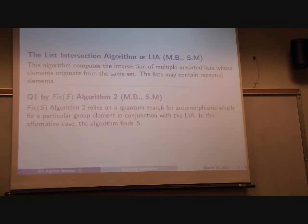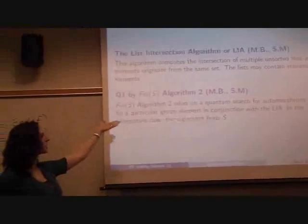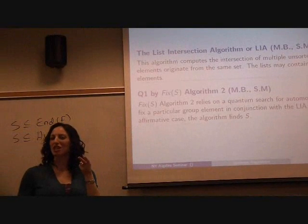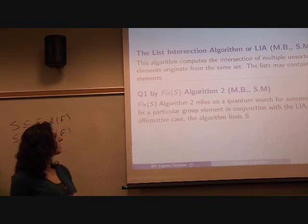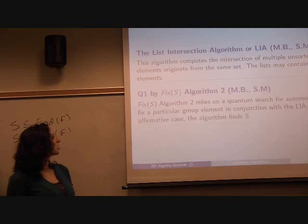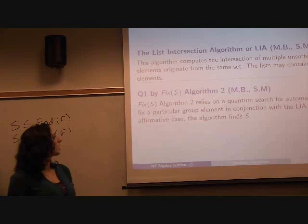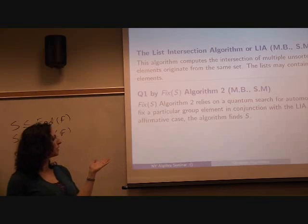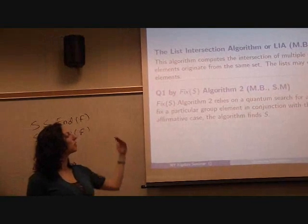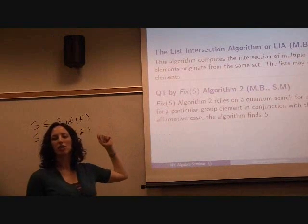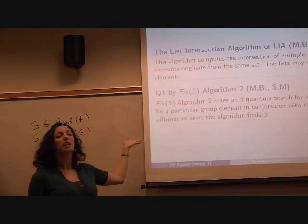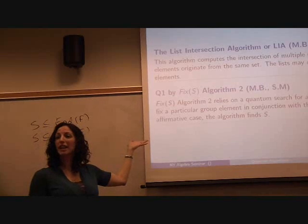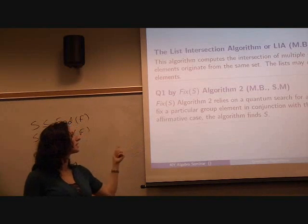Q1 was the question: is some subgroup equal to the fixed subgroup for some proper subset of the automorphism group? For Q1, we have this algorithm. I call it fixed algorithm 2 because we have two versions of the algorithm which solve it. I'm only going to present the second one here. It relies on a quantum search which fixes automorphisms which fix a particular group element. Once we do that, we use this list intersection algorithm. And then in the affirmative case, just as Ventura's algorithm provided the set S, we will also provide the set S.